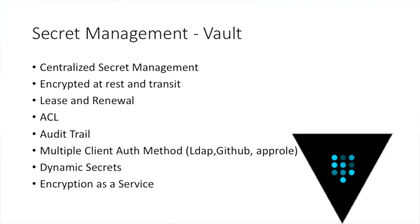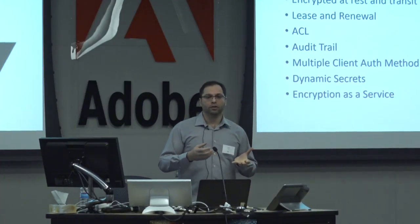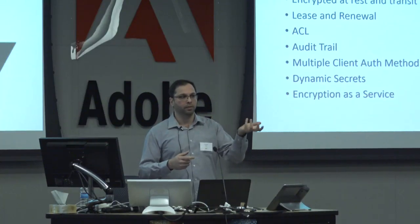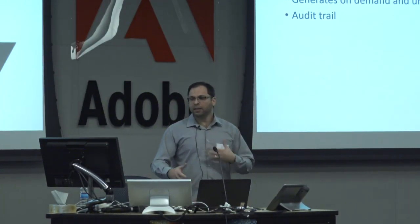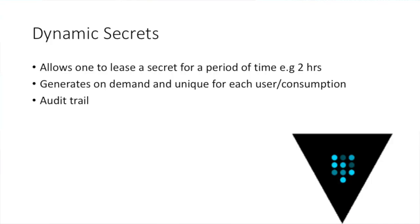There's also something called dynamic secrets and encryption as a service. You don't have to write your own code to encrypt information anymore — you can ask Vault to encrypt it for you. Dynamic secrets work like this: you could have 42 machines running and each one can have a dynamically generated secret. So if machine 39 was compromised, you know the trail of what happened and you can revoke and change it. After two hours it gets a new one anyway. Dynamic secrets allow you to generate a unique secret per machine on demand, so a compromise of one doesn't affect all the others.